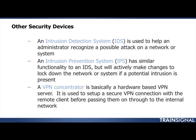Another type of security device is a VPN concentrator, which is basically a hardware-based VPN server. We talked about VPNs in another lesson. A VPN concentrator sets up your secure VPN connection with the remote client before passing them through to your internal network. Without a VPN concentrator, a user connects to your internal network first, and then the VPN server determines access — which creates a security vulnerability.